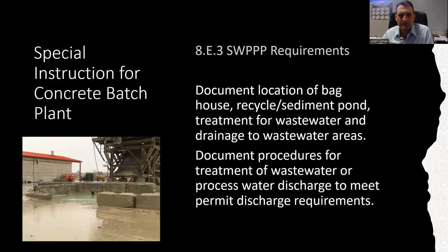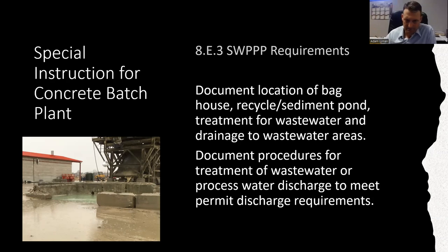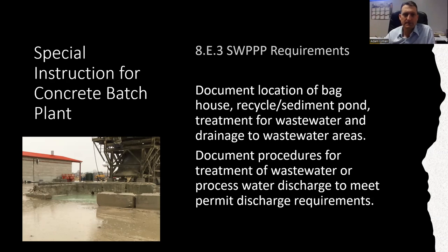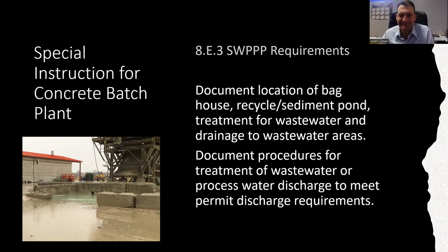Another requirement for concrete plants is the location of bag houses that receive and transfer cement, lime, or potash — those need to be located in your SWPPP because they're a source of dust and spillage. You also have to document procedures for treatment of wastewater or process water, because this is going to be high pH water. The teal blue color visible in the photo during a storm event is a good indicator that the pH is probably high. You have to be careful at a concrete batch plant to document how you're containing that water, because that's process water that shouldn't discharge with your normal stormwater.